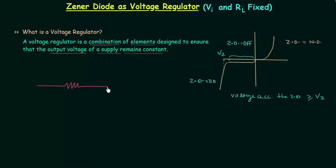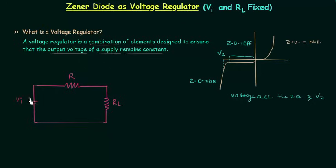Now we will understand the basic Zener regulator circuit. I will first make the circuit and then analyze it. Resistance R is the current limiting resistance. We have load resistance denoted by RL. We connect the Zener diode across the load resistance. VI is the input voltage, VZ is the Zener potential, and PZM is the maximum power dissipation capability of the Zener diode.